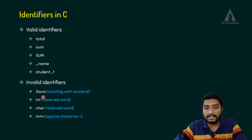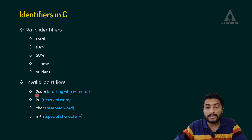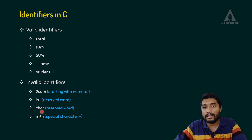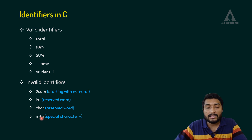Then, invalid identifier examples: '2sum' is invalid because it is starting with a numeral. 'int' is invalid because it is a reserved word — we cannot use reserved words or data types as identifiers. 'm+n' is invalid because the plus is a special character, and special characters are not allowed in identifiers.